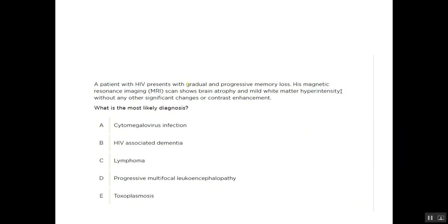Progressive. He has gradual and progressive memory loss. His MRI shows brain atrophy, very important brain atrophy, with mild white matter hyperintensity. So we have gradual and progressive memory loss and MRI showing brain atrophy with mild white matter hyperintensity. What is your diagnosis?